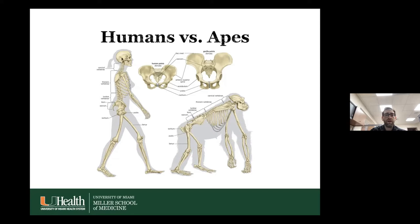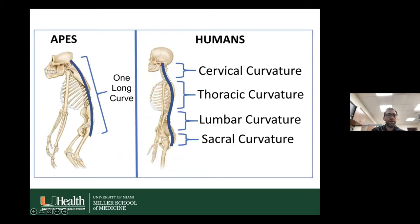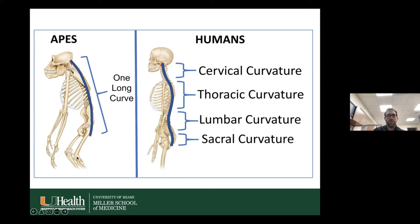The ape doesn't really have that S-shaped curve — it's more of a smooth, mild kyphosis with a flatter pelvis. The human stands upright while the ape leans forward and needs forelimbs for movement. That's because of center of gravity: in humans it's head over shoulders over hips over feet, whereas in the ape the center of gravity is anterior to the feet, so it's always being pulled forward.